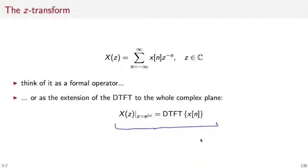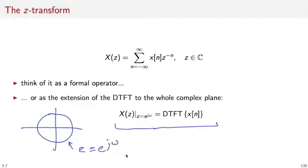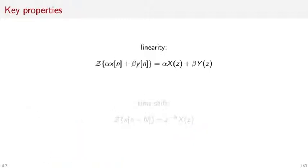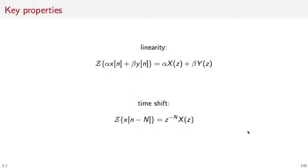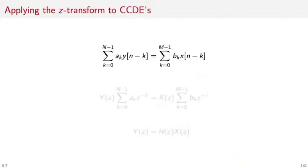This relationship will reappear: if you compute the Z-Transform along the unit circle — the locus on the complex plane for which z equals e to the j omega — you have the discrete time Fourier transform. In this class we will consider the Z-Transform mainly as a formal operator and not delve deeply into its mathematical subtleties. There are two key properties: first, linearity — the Z-Transform of a linear combination of two sequences is a linear combination of their Z-Transforms. Second, the time shift property — the Z-Transform of a time-delayed sequence x[n − N] is the Z-Transform of the original sequence multiplied by z to the minus N.